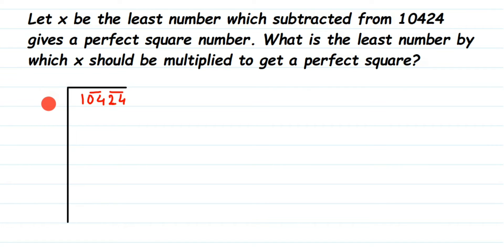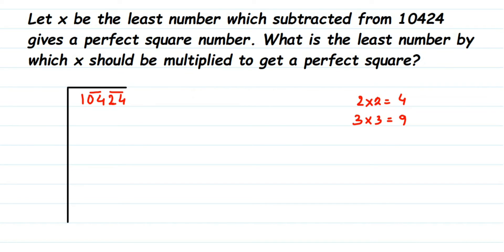Since we're finding a perfect square, we choose the first divisor as a perfect square number closest to the first group, which is 1. We know 1×1 = 1, so we take 1 as our first divisor. Subtract: 1 minus 1 equals 0. Now drop the next pair, which is 04, giving us 04 as the new dividend.